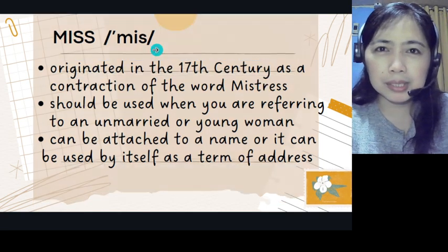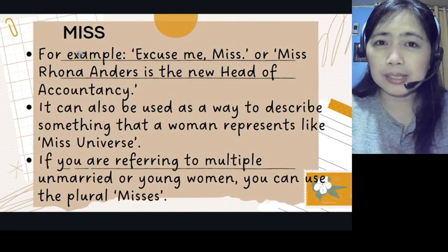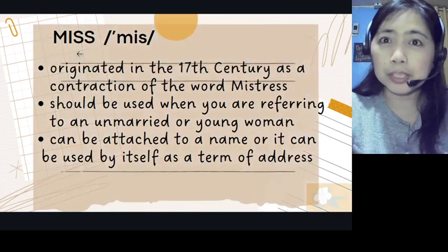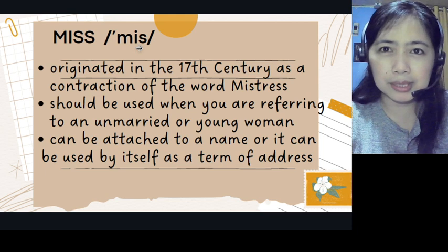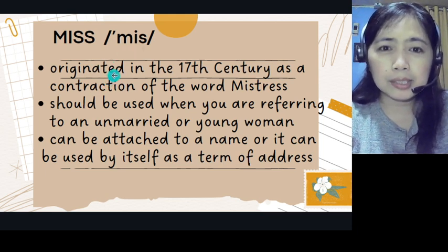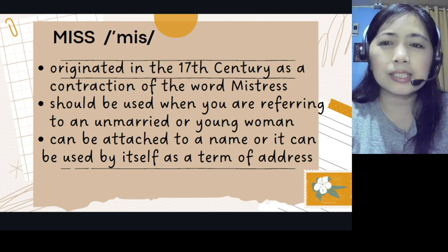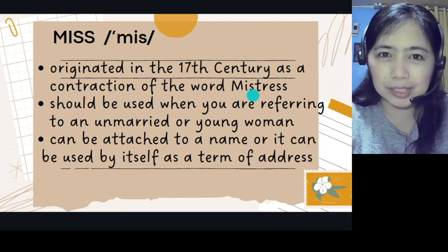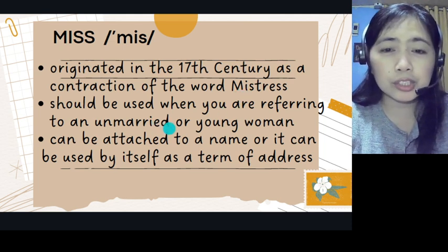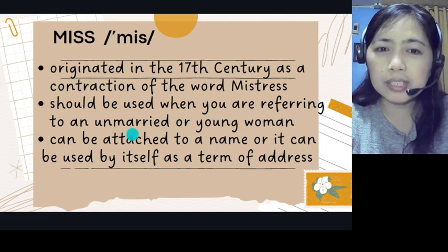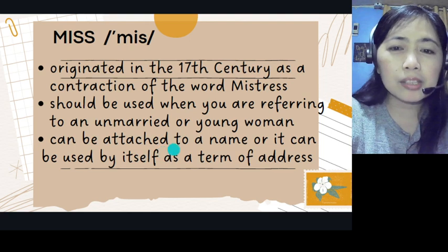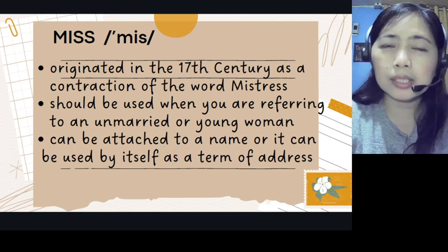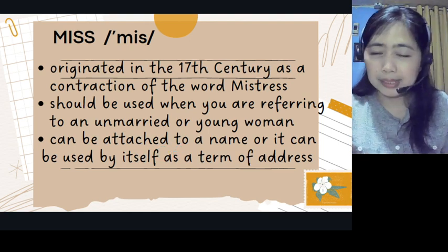The first word is Miss, spelled M-I-S-S. By the way, this is in the noun form, not the verb form. The pronunciation is 'Miss.' This word originated in the 17th century and is a contraction of the word 'mistress.' It should be used when you are referring to an unmarried young woman. It can be attached to a name or used by itself.